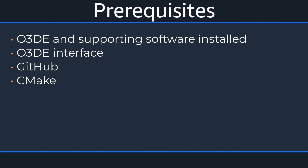Before we begin, you should have O3DE from the development branch and its necessary software components installed. Familiarity with the Git version control system and Git commands will also be helpful. Similarly, CMake and its commands will also be used. If you need additional help with any of these topics, please visit the links in the description below.